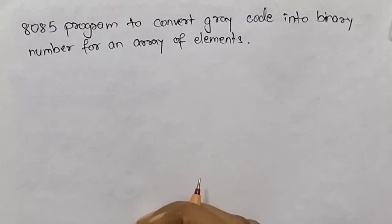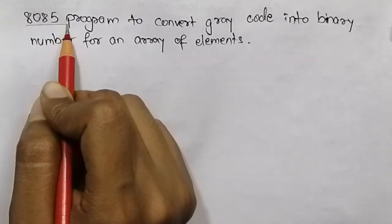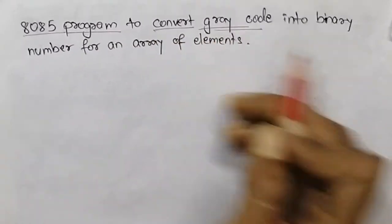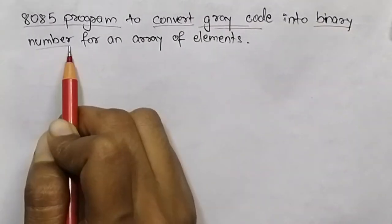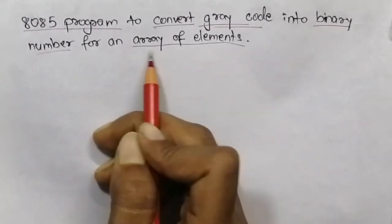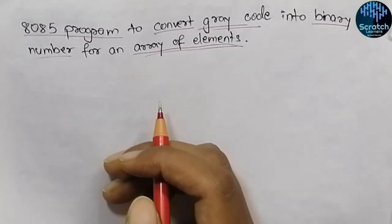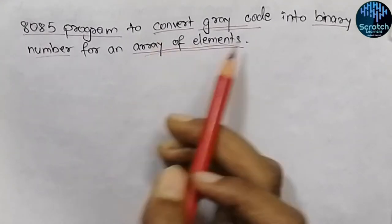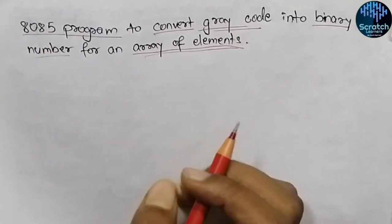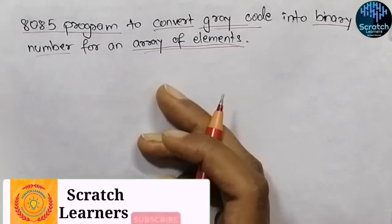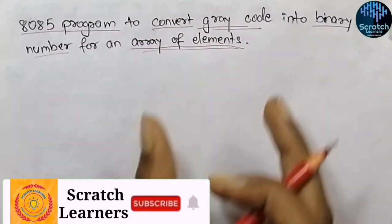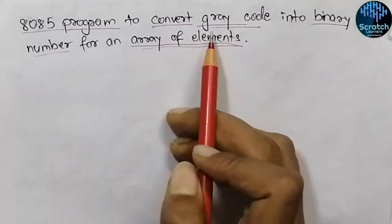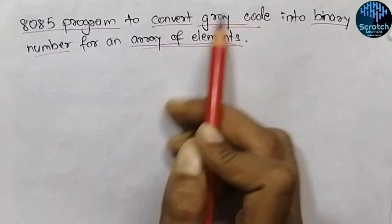Hello guys and welcome back to our YouTube channel. Today we will see the 8085 program to convert gray code into its equivalent binary number for an array of elements. I hope you have already watched my previous video where we discussed how to convert gray code into binary code. Here we will convert a set of numbers from gray code to binary code.